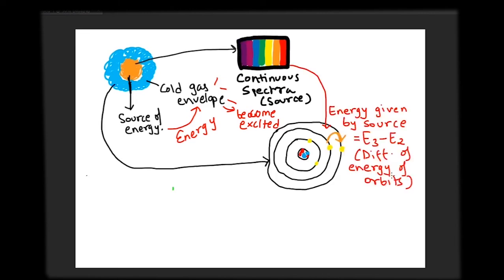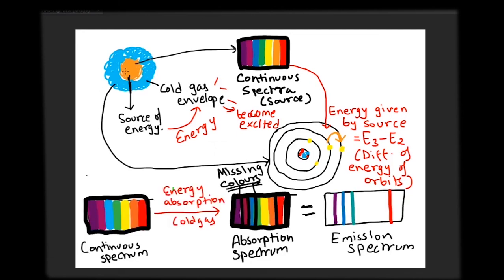The electrons in the atoms of cold gas will absorb specific energies to jump to higher energy states. These energies will be calculated in the same way as discussed earlier. The absorption of specific energies corresponding to the above transitions result in the presence of dark absorption lines in the continuous spectrum of the source. This is called the absorption spectrum because the energy was absorbed instead of being emitted.